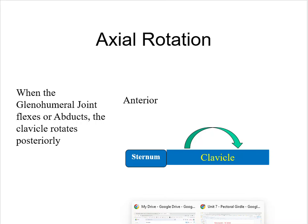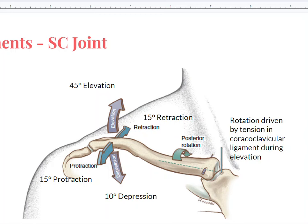Here's an image from the slide deck. So this is elevation of about 45 degrees and depression for about 10 degrees in the frontal plane of the sternoclavicular joint. So that's right here between the sternum and the clavicle.